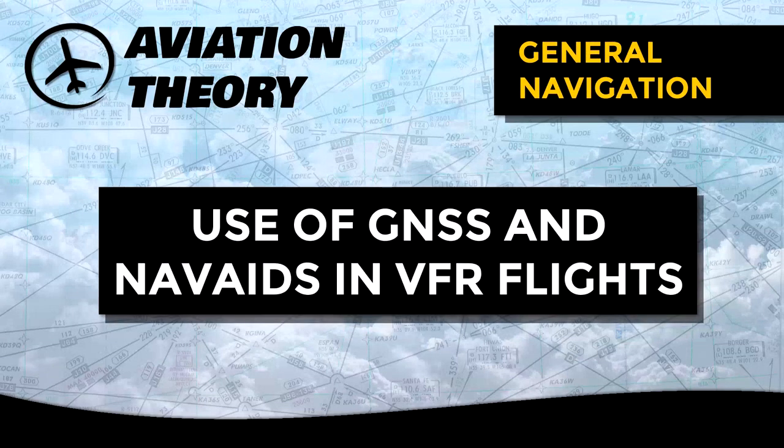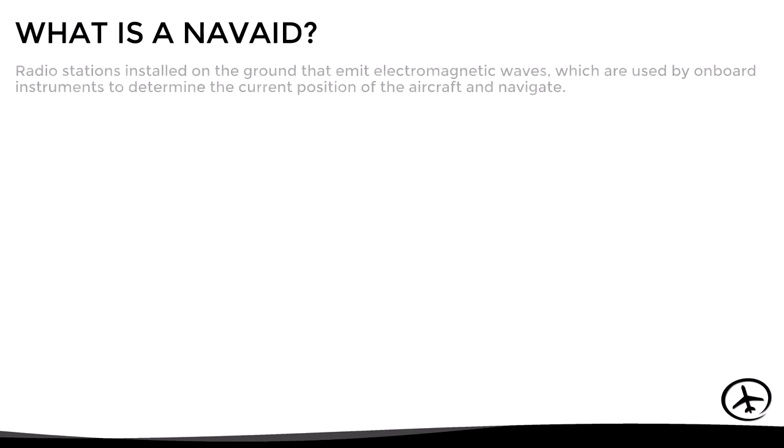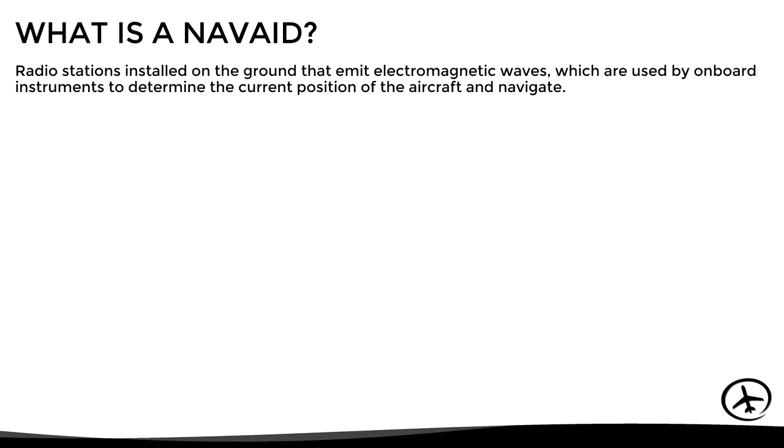Today, we will talk about the use of GNSS and radionavades in VFR flights. First of all, let's see what a navade is. In aviation, a navade is a radio station installed on the ground that emits electromagnetic waves, which are used by onboard instruments to determine the current position of the aircraft and eventually navigate.